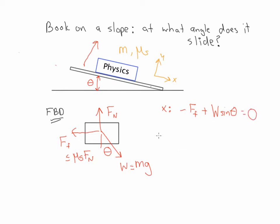In the y direction, the normal force points up minus the other component of the weight, which is W cosine theta, and that's going to be equal to zero.